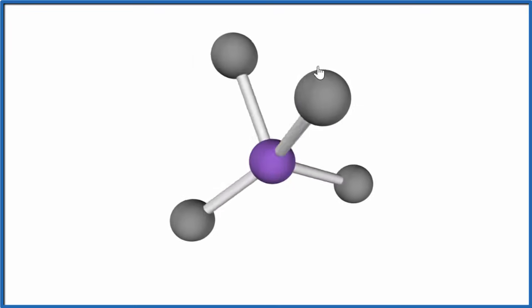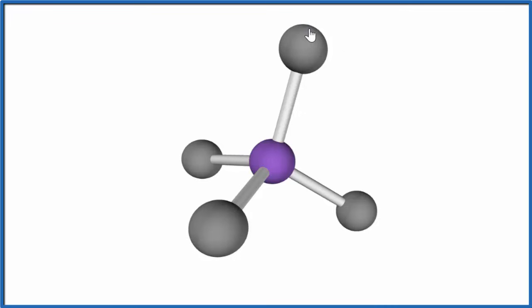Since we don't have any lone pairs, the molecular geometry and the electron geometry, they're the same. Both are tetrahedral. So since there's no lone pairs, molecular geometry, electron geometry, they're the same.